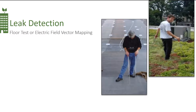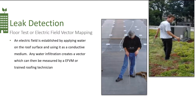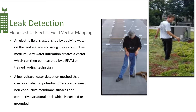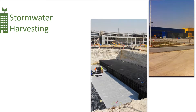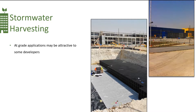Electric field vector mapping: an electric field is established by applying water on the roof and using the conductive medium. Any water infiltration creates a vector which can then be measured by a trained roofing technician. The low voltage water detection method creates an electronic potential difference between the non-conductive membranes and the conductive structural deck, which is earthed or grounded.